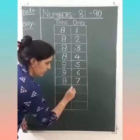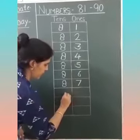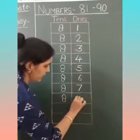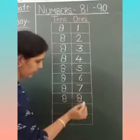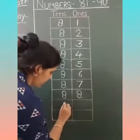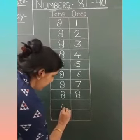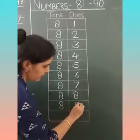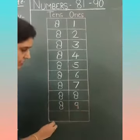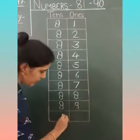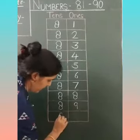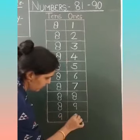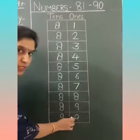Next number is 88. At the 10s place: 8, at the 1s place: 8. 88. At the 1s place: 9. 89. And the last one is 90. At the 10s place: 9, and at the 1s place: 0. 90.